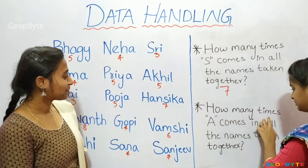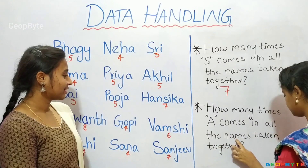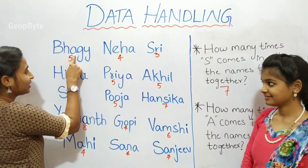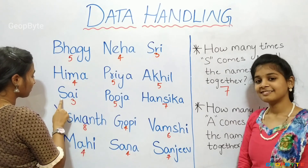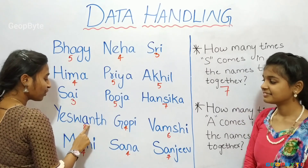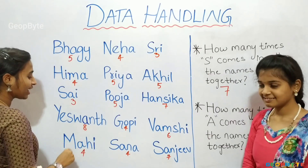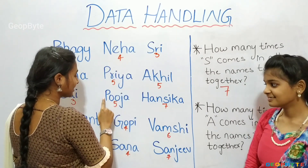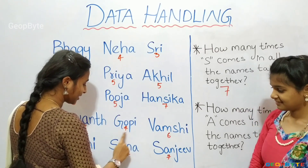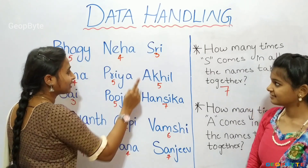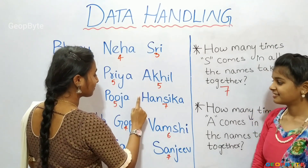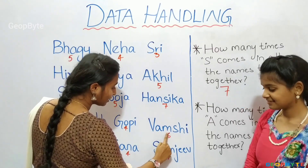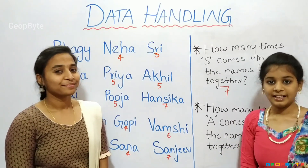How many times does A come in all the names taken together? Let us see. One, two, three, four, five, six, seven, eight, nine, ten, eleven, twelve, thirteen, fourteen, fifteen. Now, let us write fifteen.